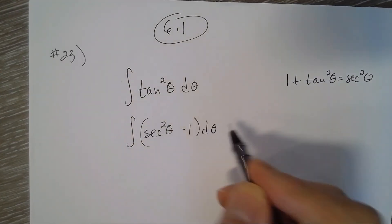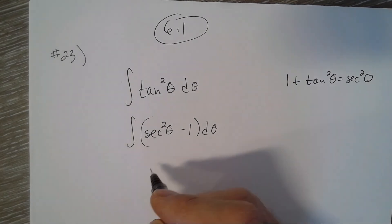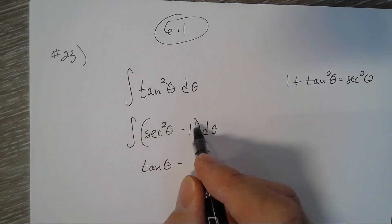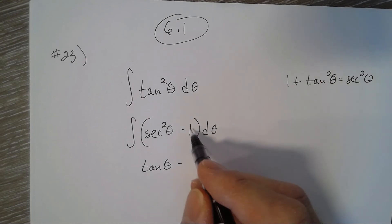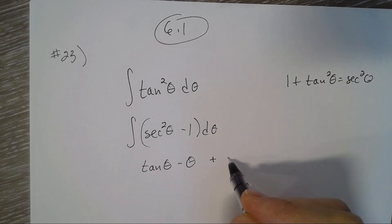And we do know the antiderivative of secant squared — that's just tangent theta. Minus the antiderivative of one, which is theta, plus C.